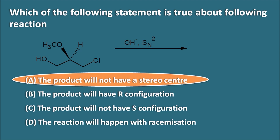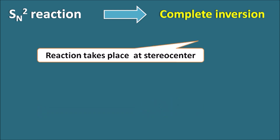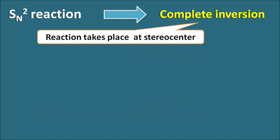This is an SN2 reaction where the nucleophile is OH⁻ and the leaving group is chlorine. SN2 reactions lead to complete inversion of configuration — Walden inversion — but this inversion is observed only when the reaction takes place at a stereocenter. In the given compound, chlorine is attached to a CH₂ group, not at the stereocenter. So when the reaction takes place at the chlorine, no inversion of configuration occurs.